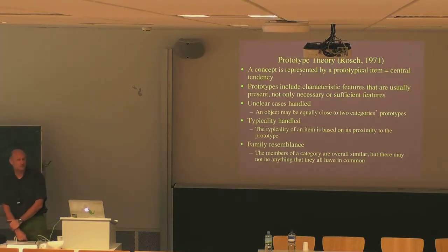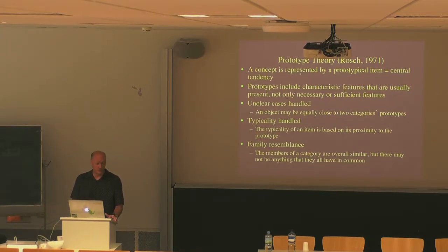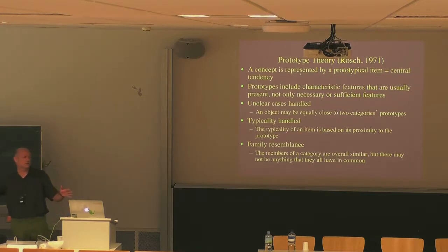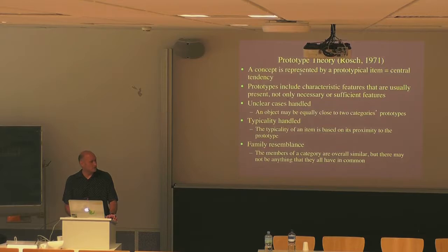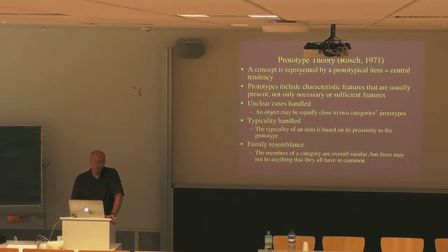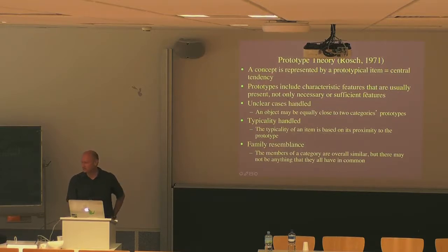In prototype theory you do not have a single definition for a concept; you have a constellation of features cohering together. The representation format is the central tendency of the category — for continuous dimensions, that's simply the mean. For binary dimensions, the central tendency is the most common feature value among category members. Importantly, prototypes include characteristic features rather than just necessary and sufficient features.